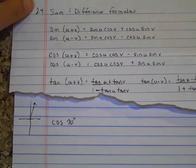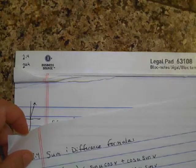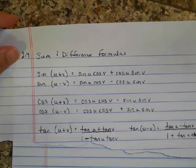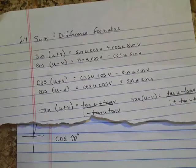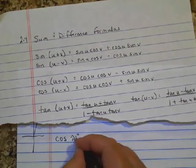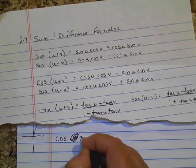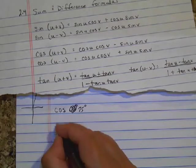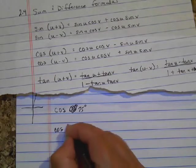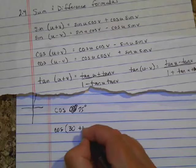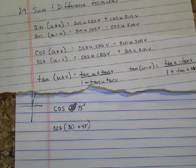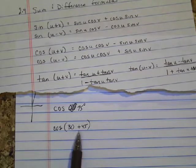So I want to try to use the sum and difference formula. So since 70 is not on the unit circle, I'm going to change 70. Oops, sorry, I meant to make this a 75. I'm going to change 75 into two numbers that are on the unit circle. I'm going to change cosine of 75 degrees to be cosine of 30 plus 45, because 30 plus 45 is 75. So now I have the cosine of two things put together.